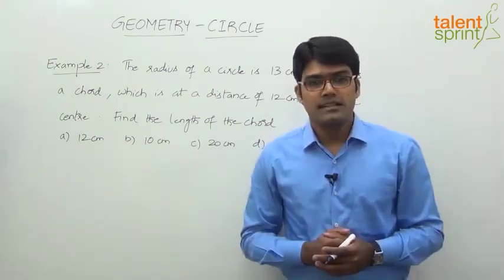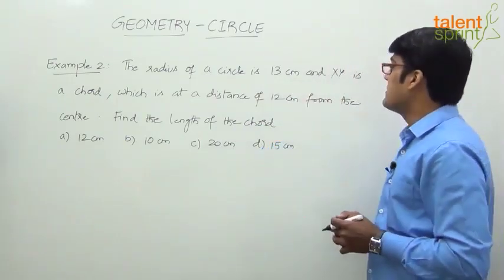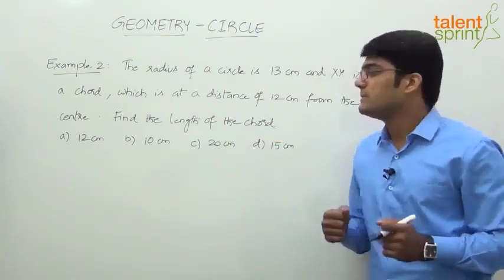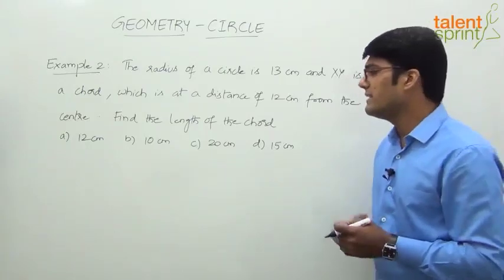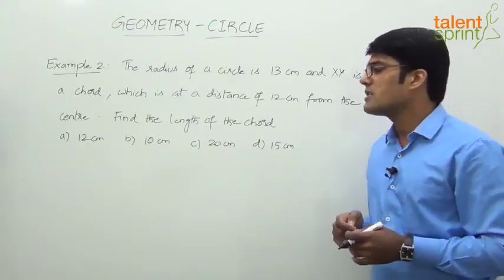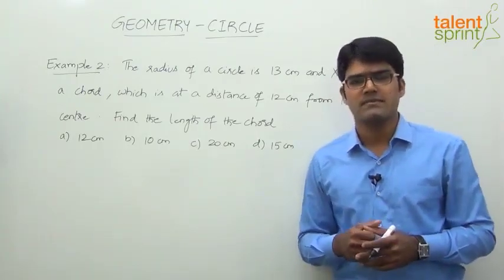Alright, so here comes the next example. Let's look at this one. The radius of a circle is 13 centimeters and XY is a chord which is at a distance of 12 centimeters from the center. Find the length of the chord. The given options are 12 centimeters, 10 centimeters, 20 centimeters, and 15 centimeters.